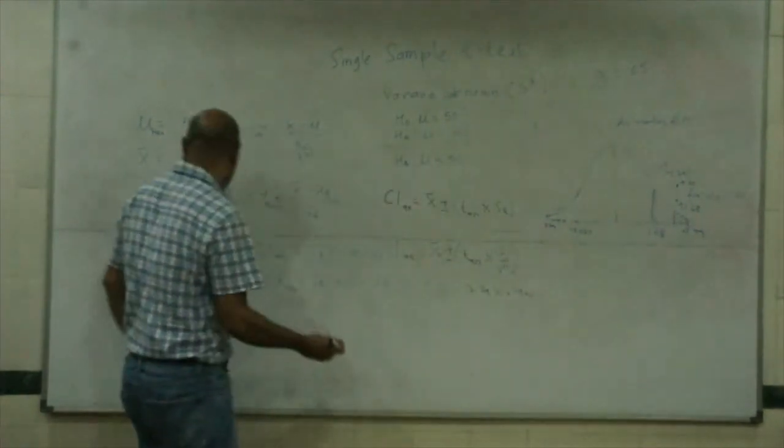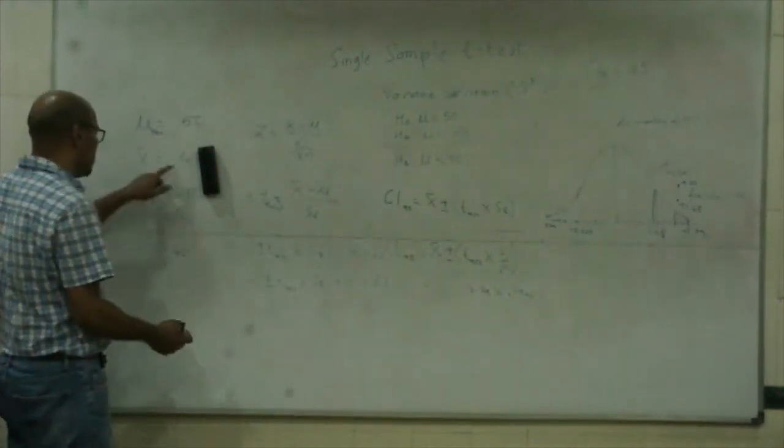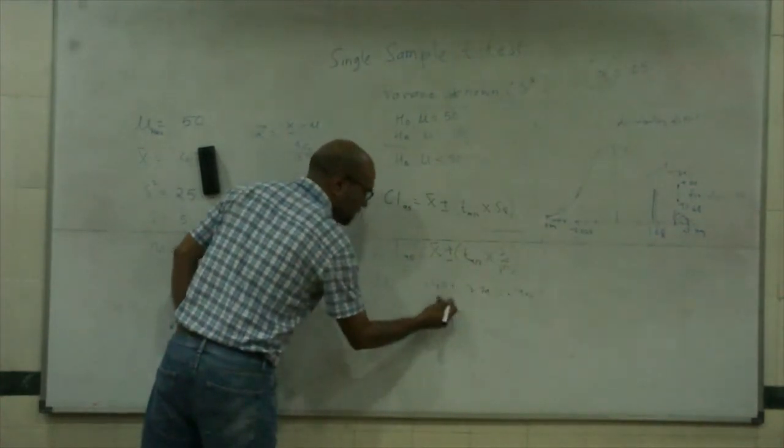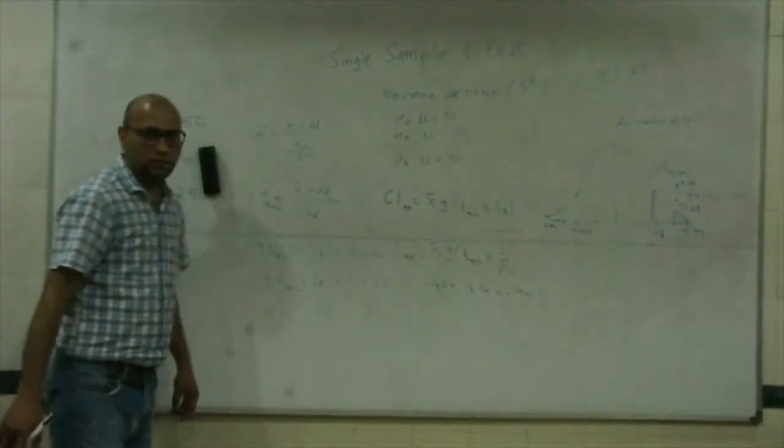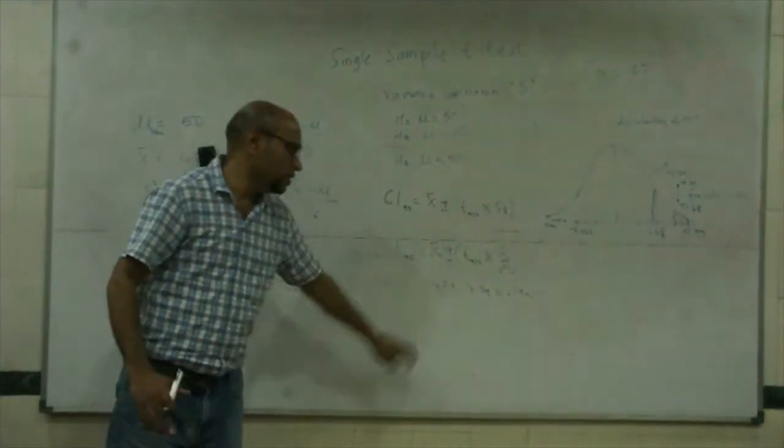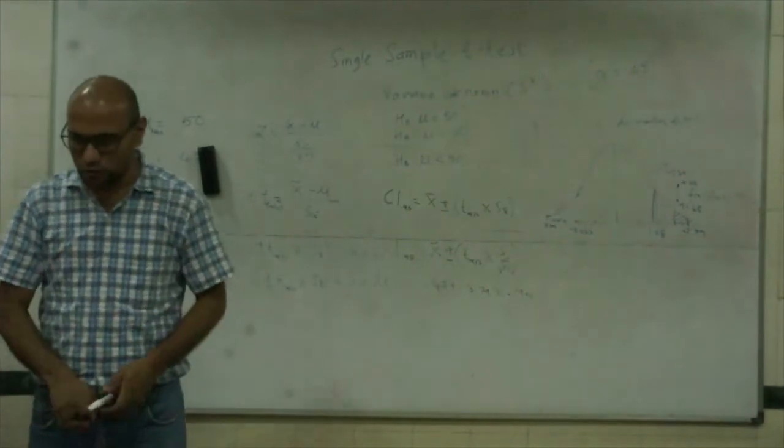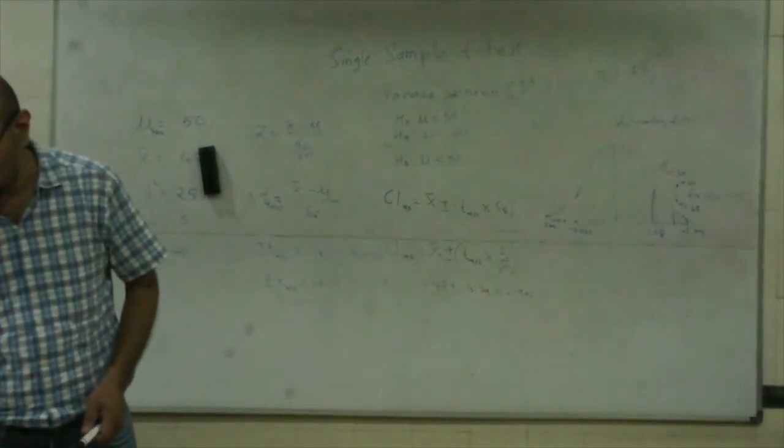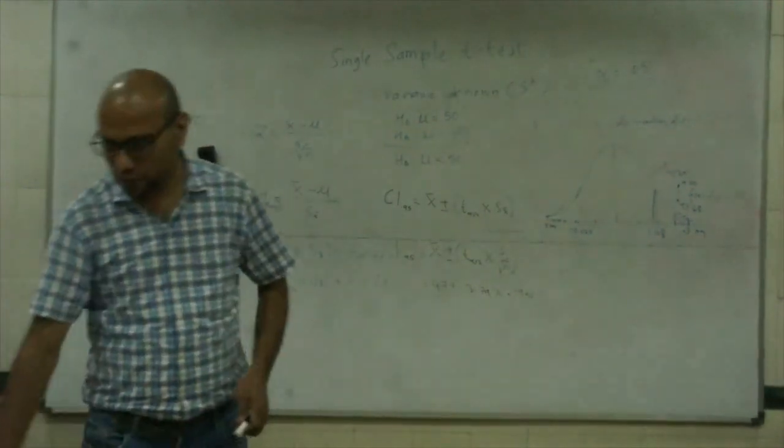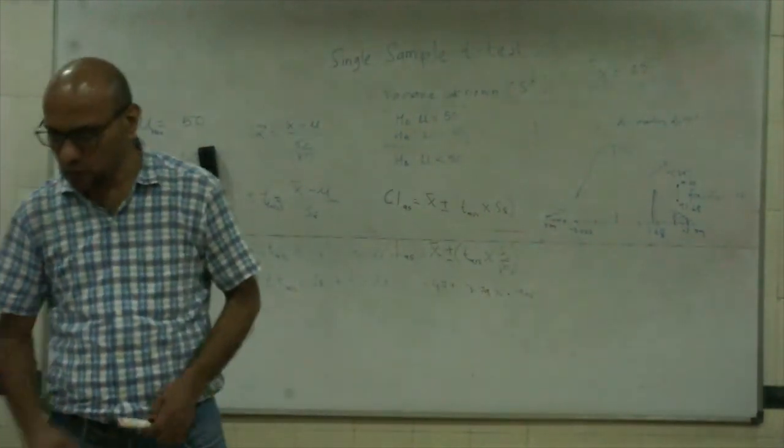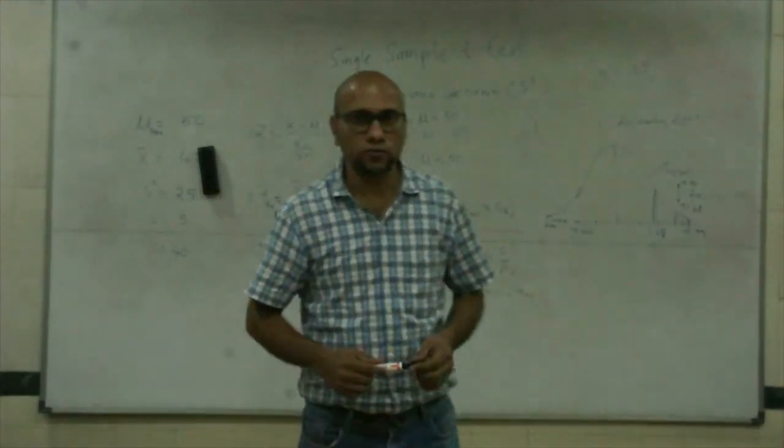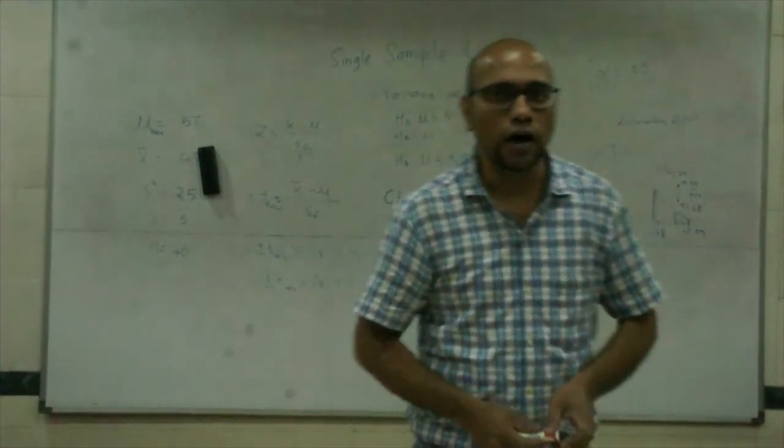And with X bar at 47, so 47 plus minus, if we solve this we get the lower and upper values for X bar. That's what gives us the confidence interval. This is about t-test, single sample t-test with unknown variances.